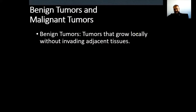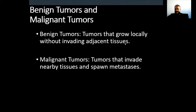Benign tumors are tumors that grow locally without invading adjacent tissues. So they don't go anywhere — they stay where they started. They cannot metastasize and cannot invade. But malignant tumors are tumors that invade nearby tissues and spawn metastases. If tumor cells can move out from their original location and form new colonies of tumor masses, then we call them malignant tumors. So cancers are malignant tumors.